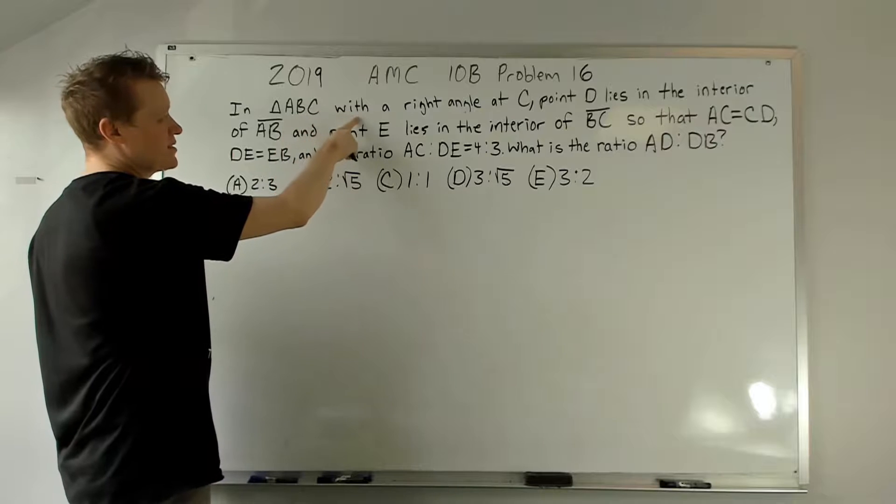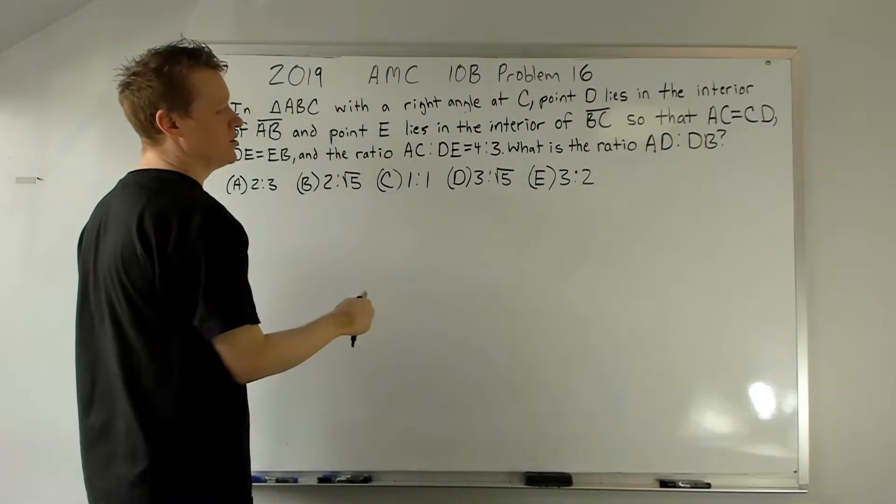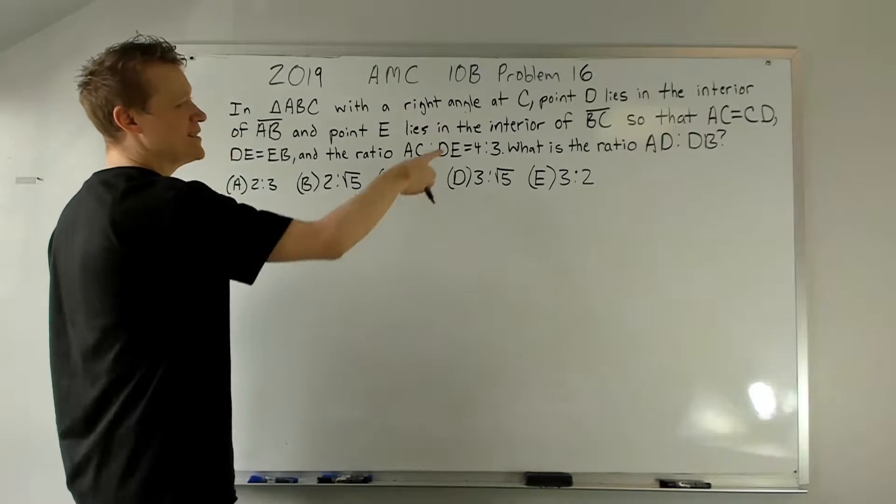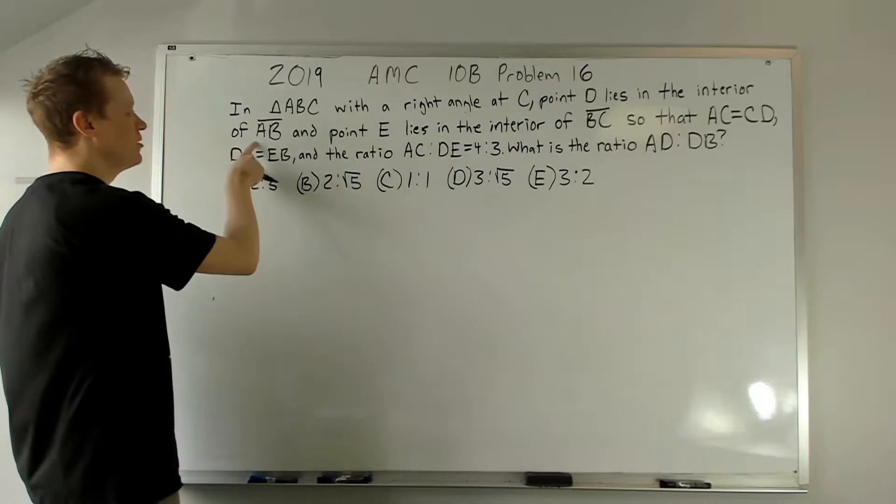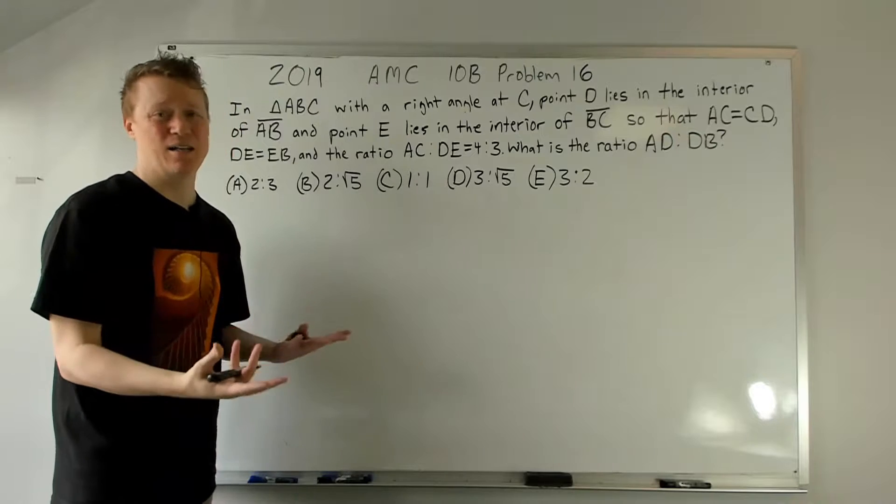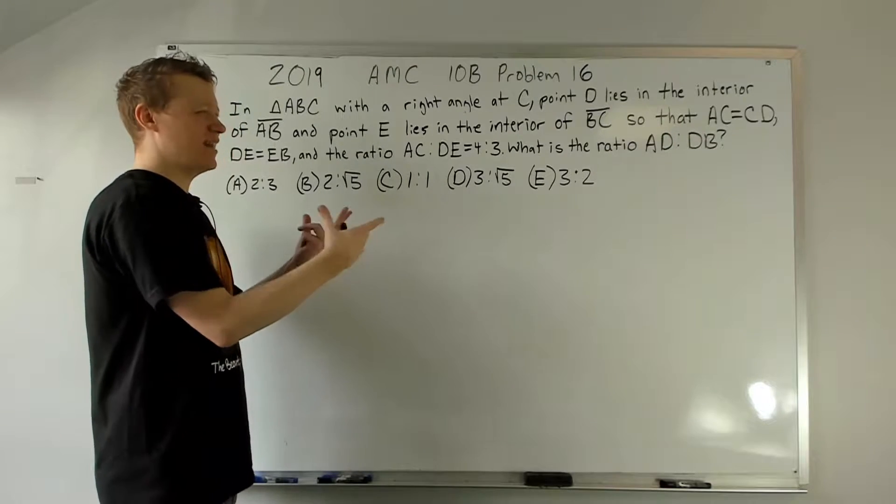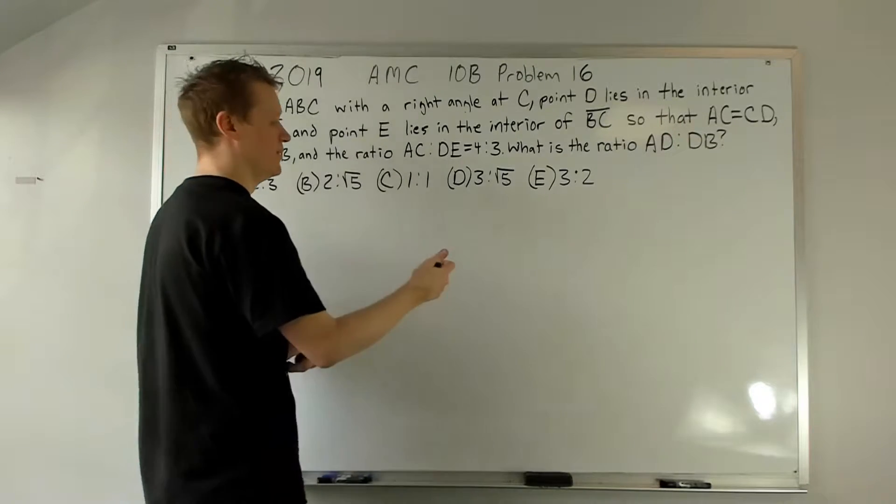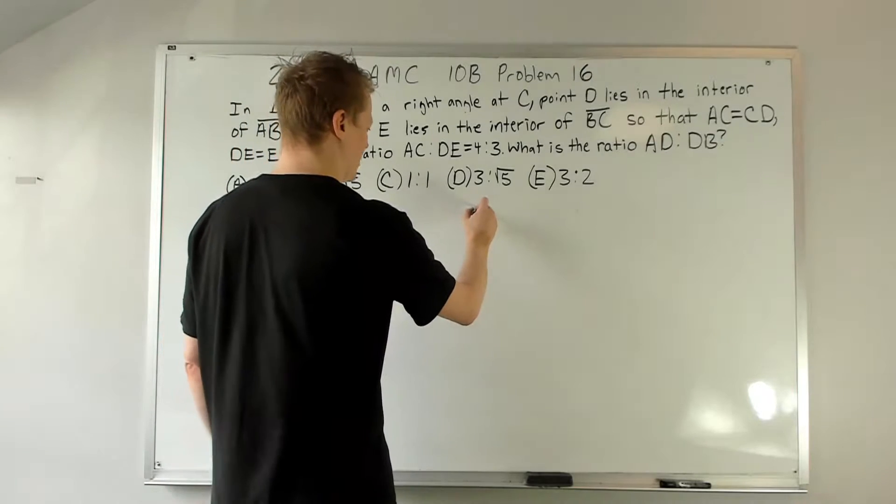In triangle ABC with a right angle at C, point D lies in the interior of AB, and it's about this point that you're like, what are they talking about? The reason is because you don't have a picture. So make one. Make a picture.